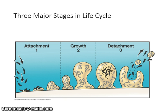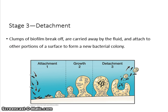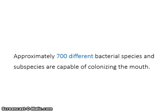There are three major stages in the life cycle of biofilm. Stage one is attachment, stage two is growth, and stage three is detachment. In stage one, the bacteria attaches to a surface. In stage two, growth, the bacteria attract other free-floating bacteria to the biofilm. The attached bacteria secrete a film known as the extracellular slime layer. This layer acts as a protective shield for the bacteria in the biofilm. The bacteria grow to form mushroom-shaped biofilms that attach to a surface at a narrow base. In stage three, detachment, clumps of biofilm break off and are carried away by the fluid, then attach to other portions of a surface to form a new bacterial colony.